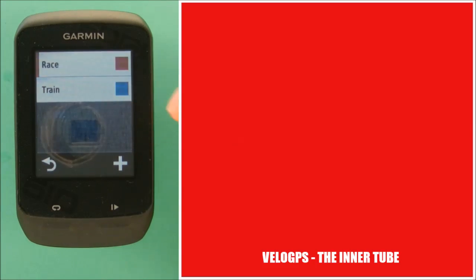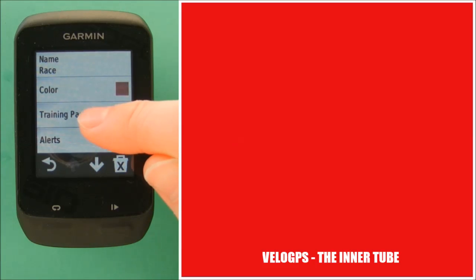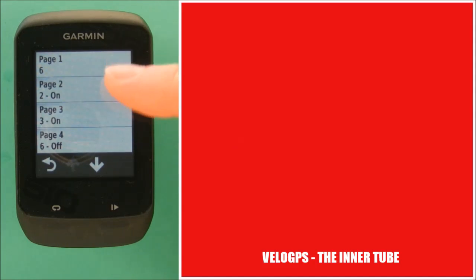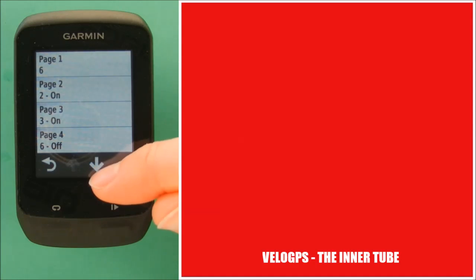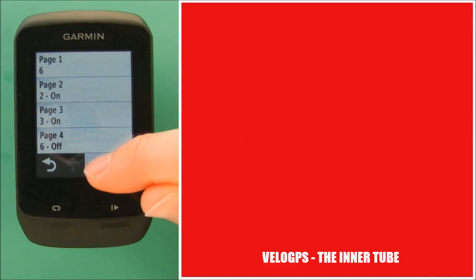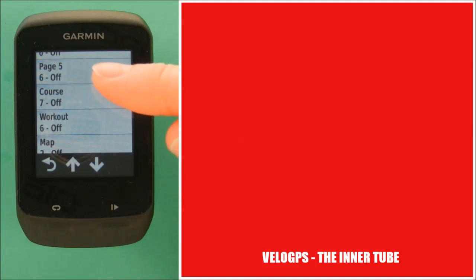So we're going to choose the race profile and then you choose training pages. Once you're into the training pages you can see that we have up to five different data pages.